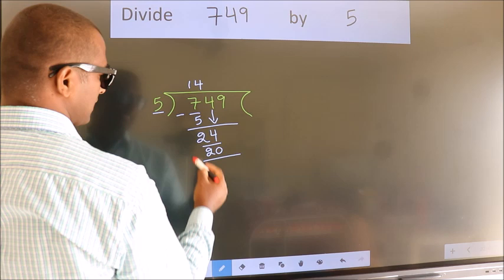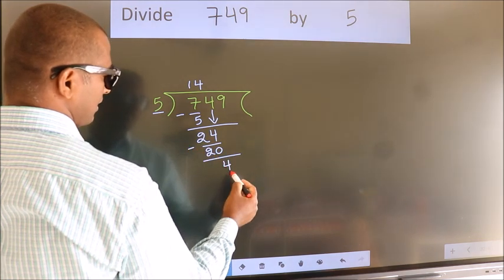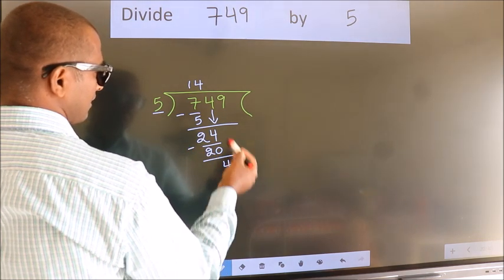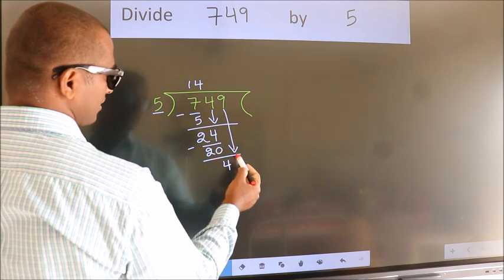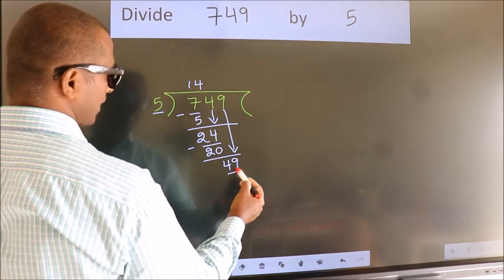Now we subtract. We get 4. After this, bring down the beside number, so 9 down. So 49.